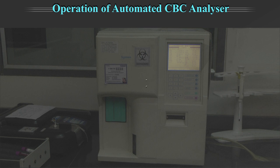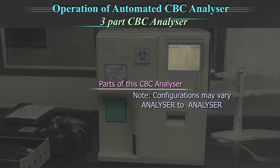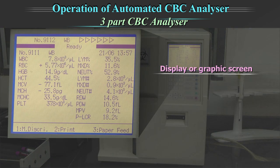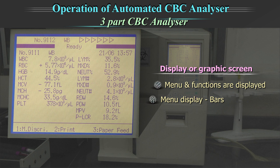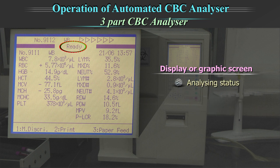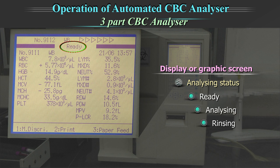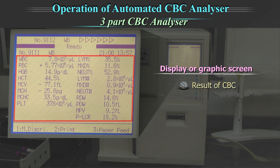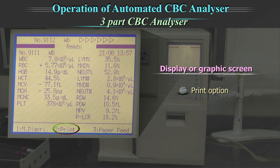We will now examine a three-part CBC analyser. Parts of the CBC analyser include the display or graphic screen where menu and functions are displayed. In the menu display, we can see bars for the sample ID number, the mode, and the analysing status, which shows the actual process status like ready, analysing, rinsing, etc. The result of the complete blood count, print option, description and paper feed are also shown on the screen.